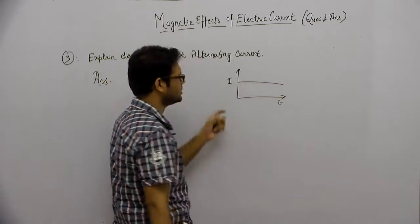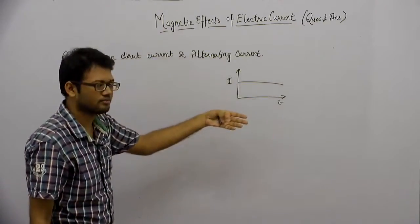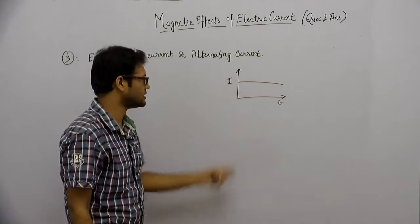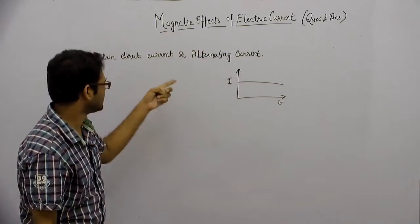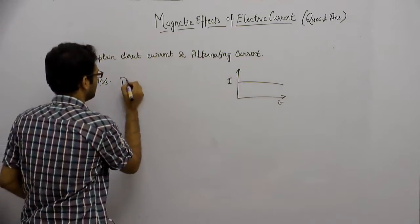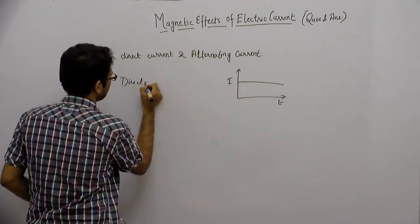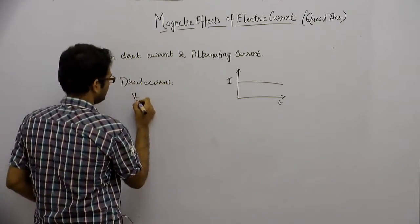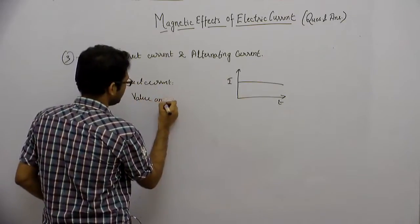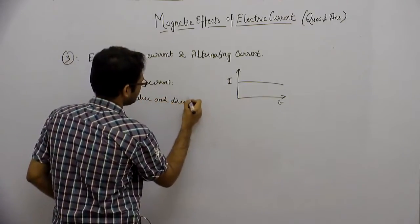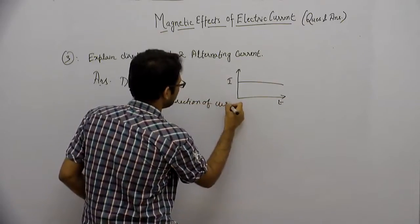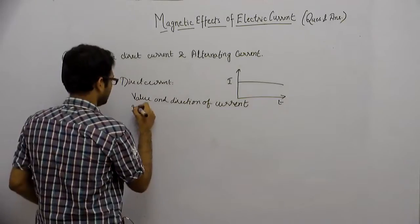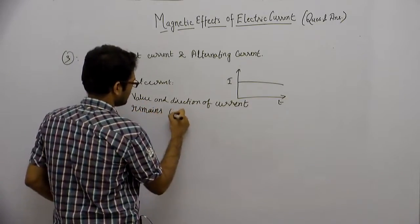इसका यह मतलब हुआ कि जैसे जैसे time बीतता जाएगा वैसे वैसे यह constant रहेगा, मतलब इसकी value time के साथ change नहीं होगी। तो direct current क्या होता है — value and direction of current remains constant with time।